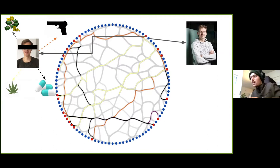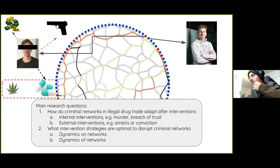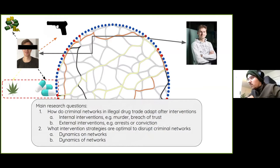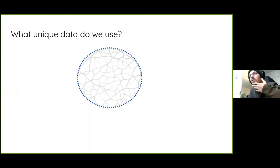We focus specifically on undermining criminal markets in the drug trade, and even more specifically on cocaine. What the Dutch National Police and Rick are mainly interested in is finding out what happens when a criminal network adapts to an external or internal intervention — external being a police intervention like detaining or arresting somebody, and internal being something like a murder or breach of trust. They also want to know how to effectively disrupt these criminal networks. Their approaches so far have been done only structurally.